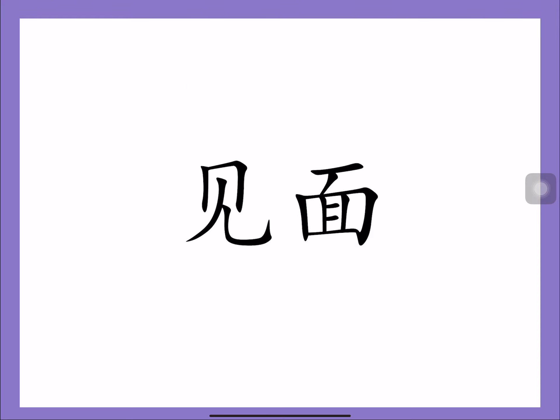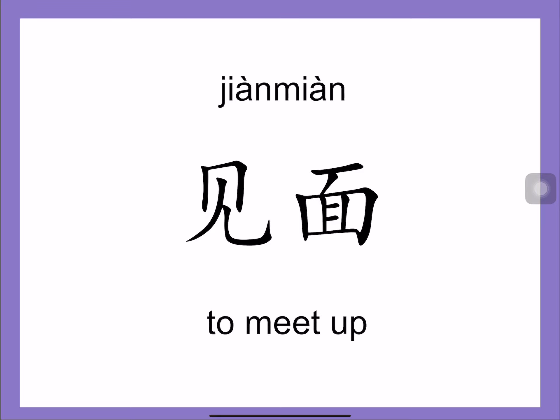First, this is the word for 'to meet up'. Do you know how to say the word? I'm sure you can recognize both characters. The first one is 见 in 再见. The second one is 面 in 面包. So 见面 — 跟我说 见面. 见面 means 'to meet up'.